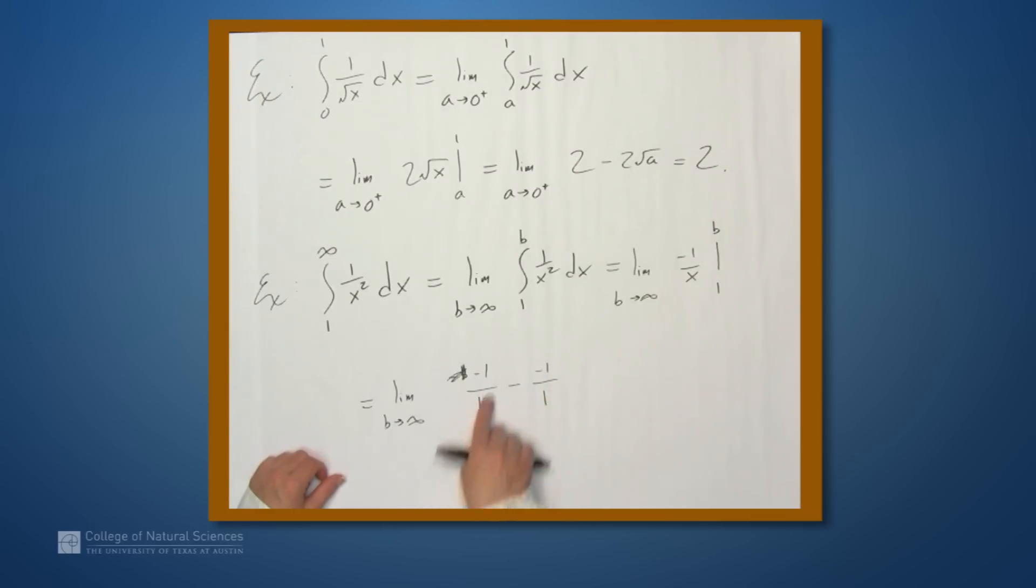As b goes to infinity, this first term disappears, and we have minus negative 1, so this is positive 1. So using this definition, we can define the area under 1 over x squared from 1 to infinity to be 1.